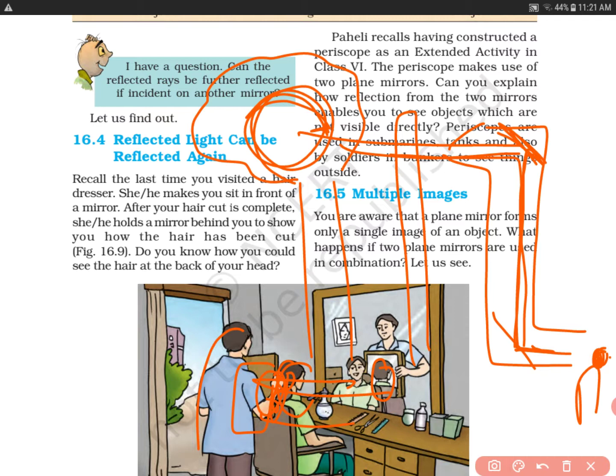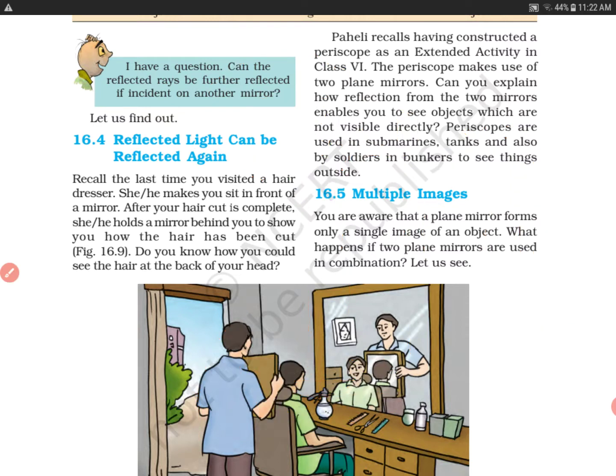The periscope makes use of two mirrors. As you have seen here, there are two mirrors at a 45-degree angle. Can you explain how reflection from the two mirrors enables you to see objects which are not visible directly?